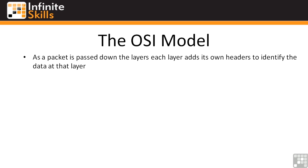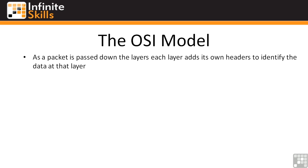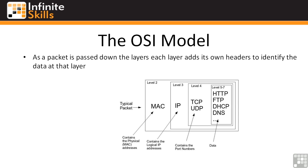Traffic starts up at layer seven at the application layer, and as it's passed down each of these layers, each layer adds its own headers to identify the data at that layer. Up at levels five through seven, that's where your protocols reside — HTTP, DHCP, DNS. When it gets to layer four, you're talking about TCP headers, so the packet just gets bigger and bigger the closer you get to the physical layer. The physical layer has no protocols because it's physical — it's wires and cabling.